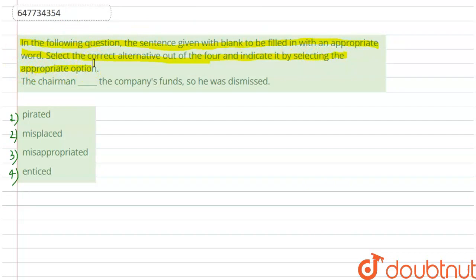What we have here is, we have 4 options given and a sentence given in which we have a blank. Now, we have to look at these 4 options to find the appropriate word. The chairman ___ the company's funds, so he was dismissed.